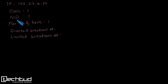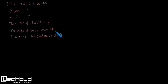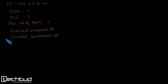We also have to find out the network ID of this IP address, the maximum number of hosts that can be in the network, the directed broadcast address for the network to which it belongs, and the limited broadcast address. To start, let's first understand what directed broadcast and limited broadcast are.